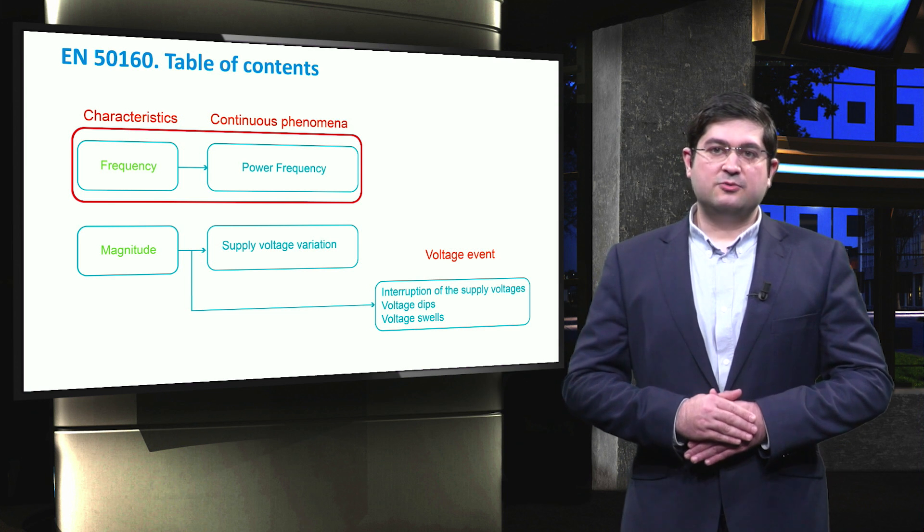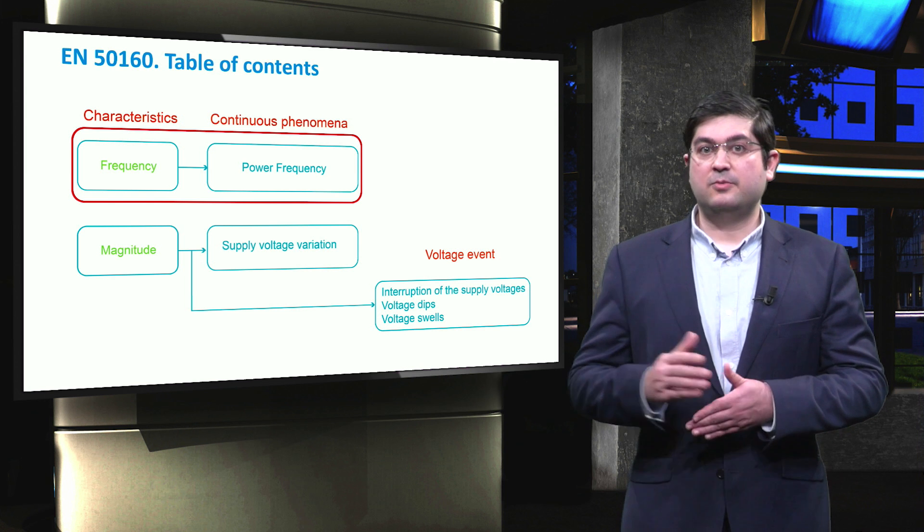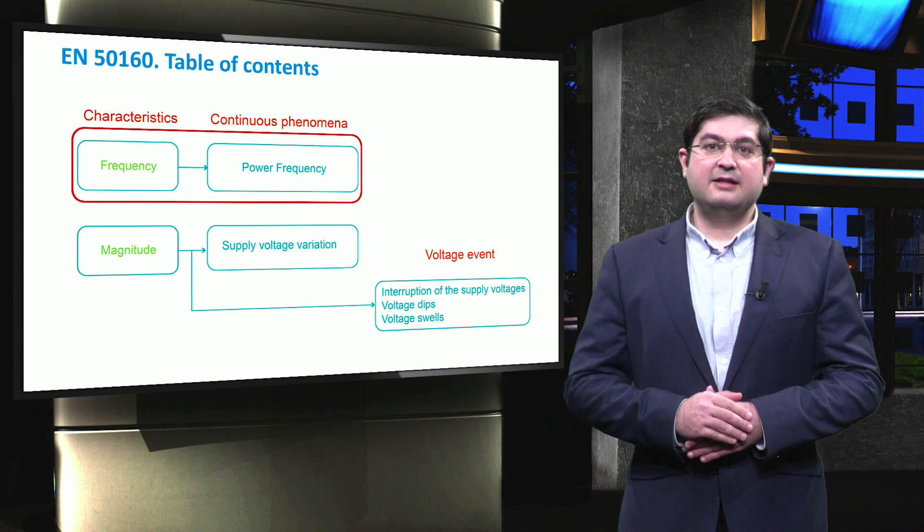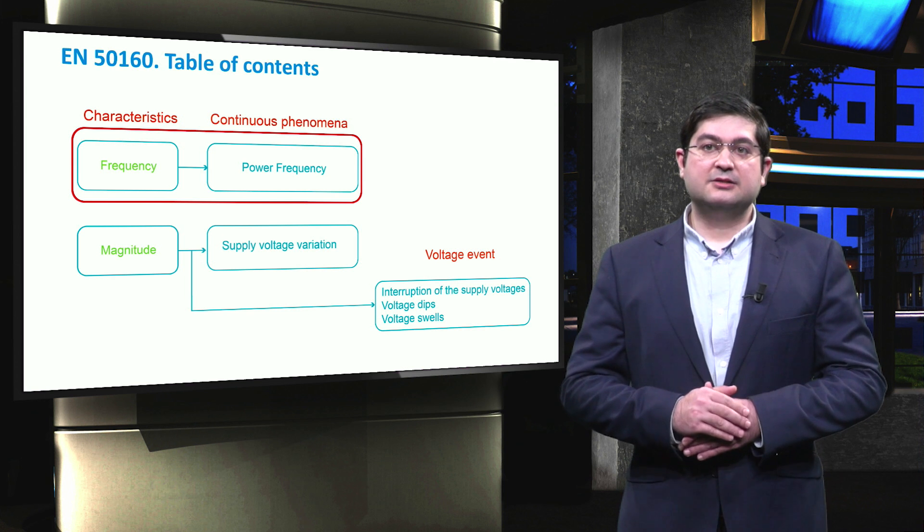In an islanded system, the maximum allowed frequency deviation is 2%, meaning 1 Hz, for 90% of the time, and 15% for 100% of the time.